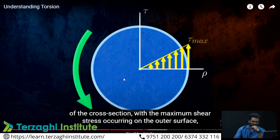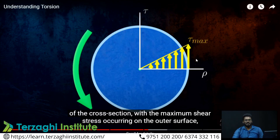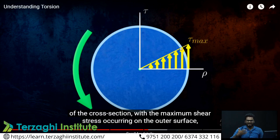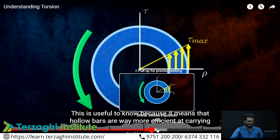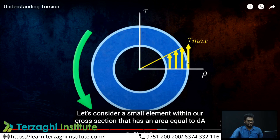The shear stress at the center of the cross-section is zero. It increases and is maximum at the outer periphery. So the maximum shear stress occurs at the outer periphery.